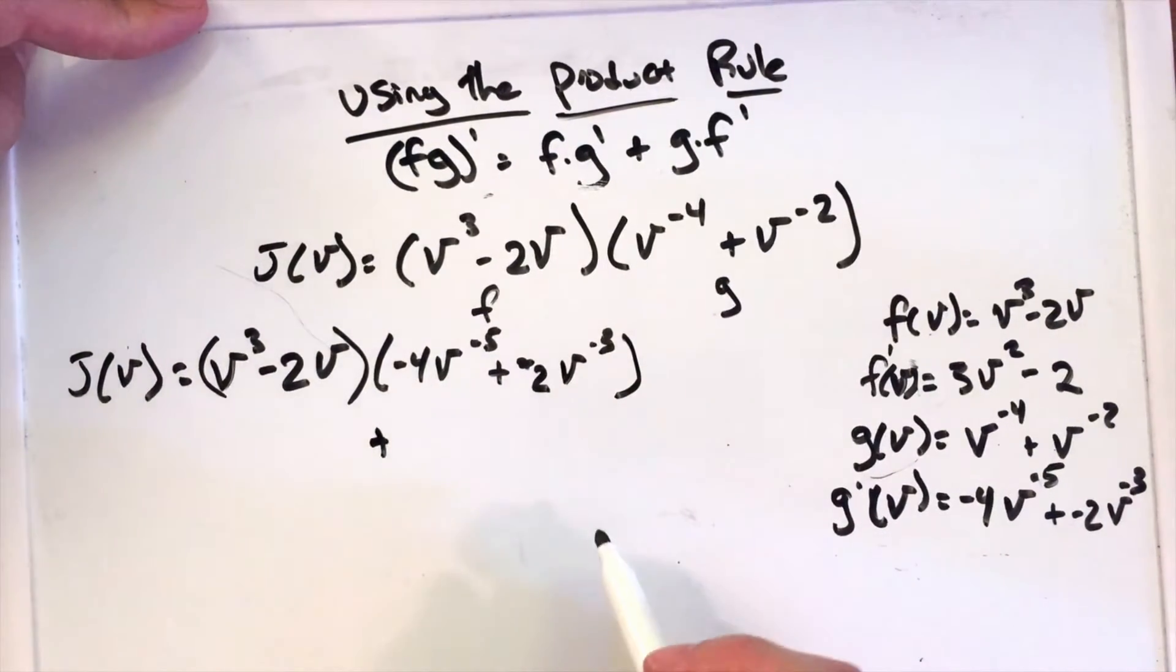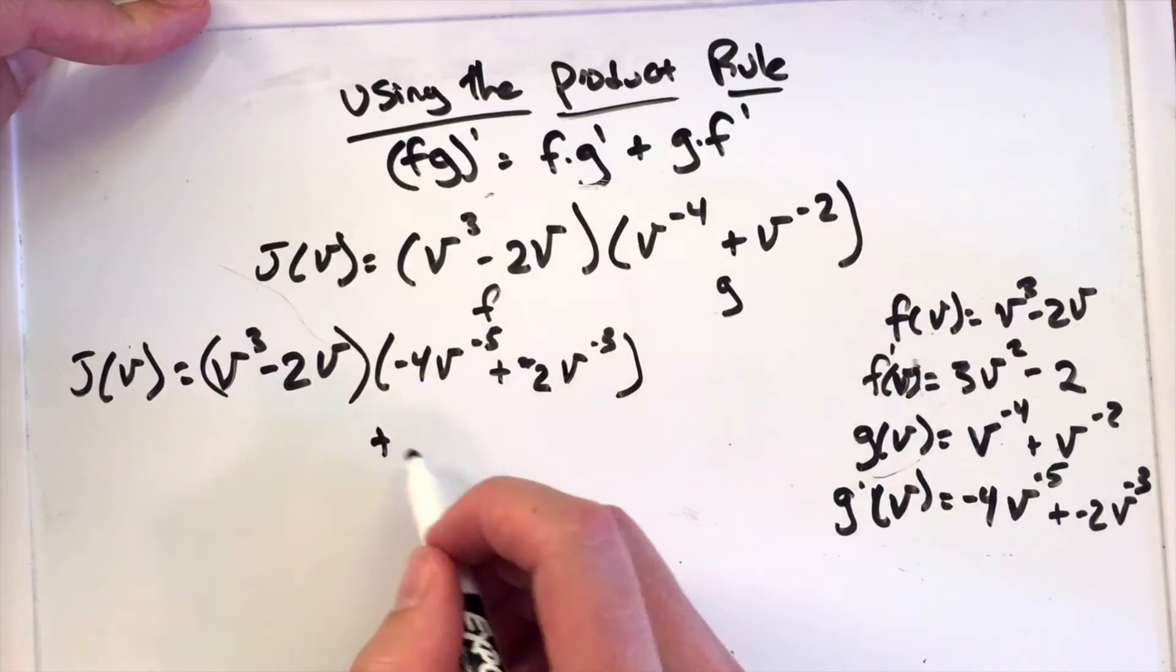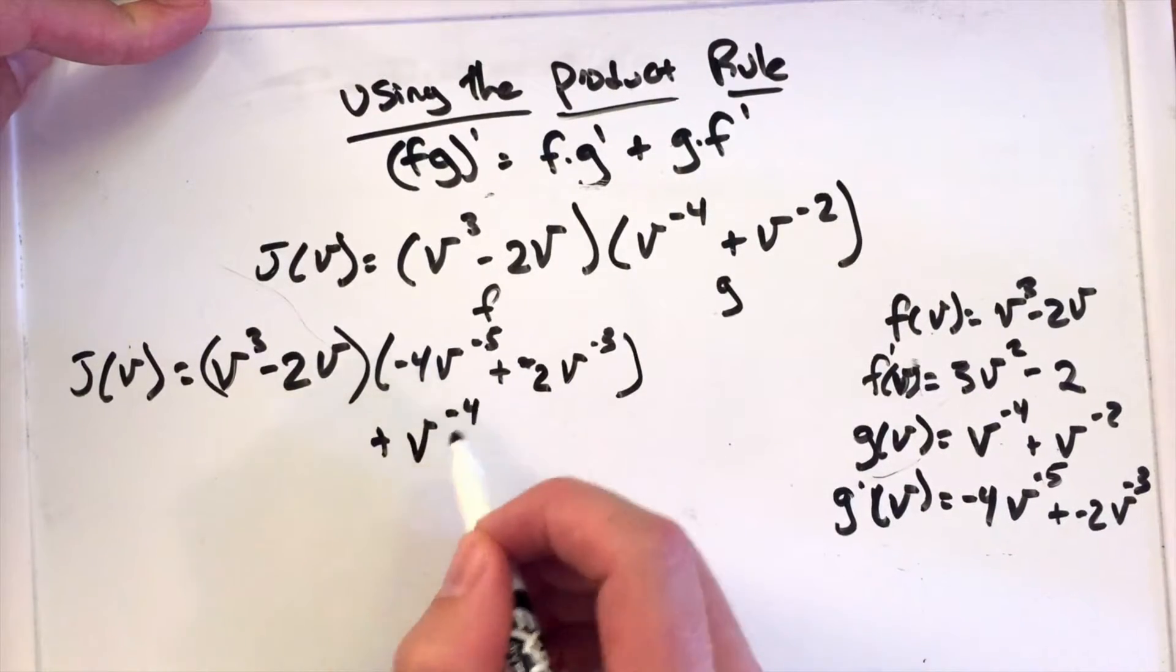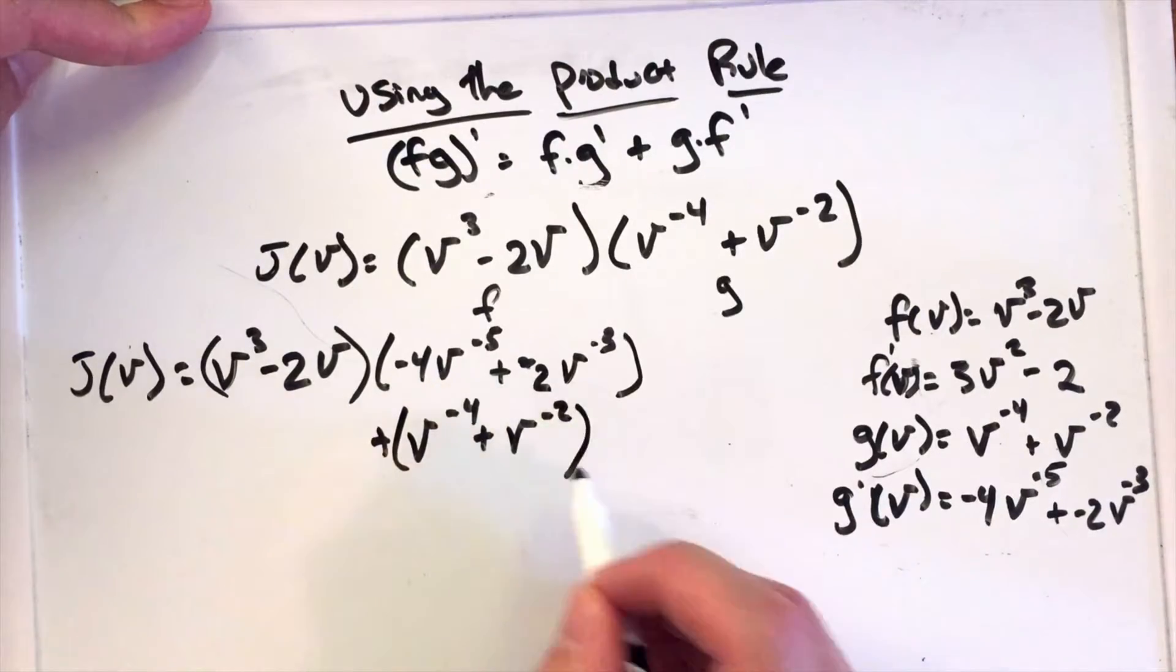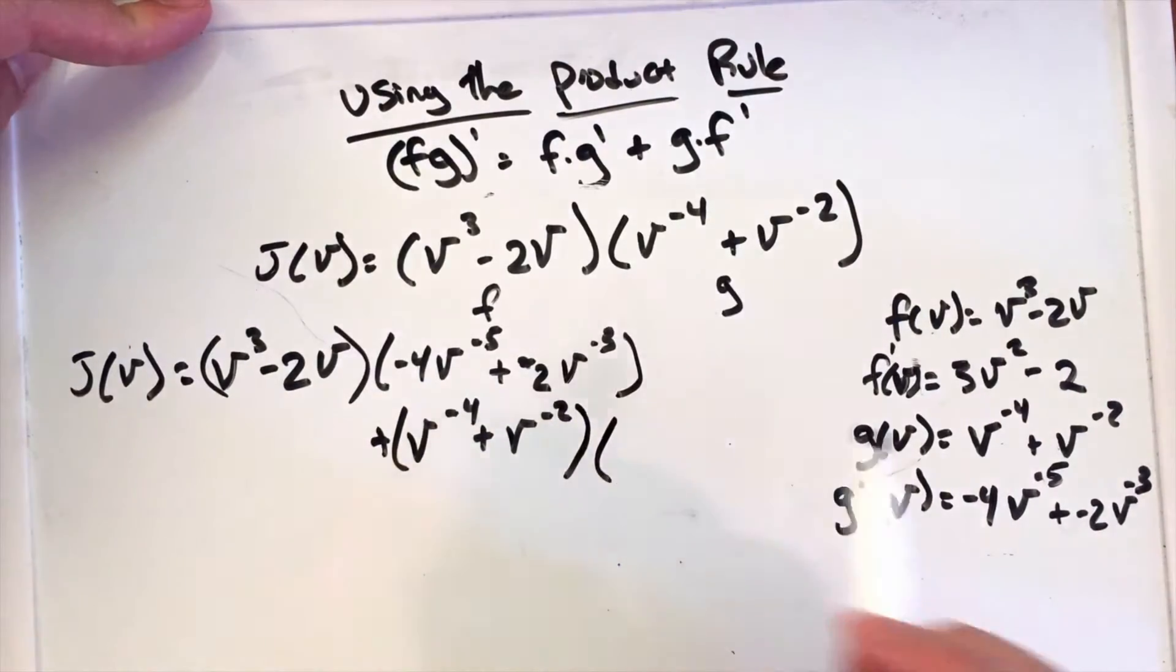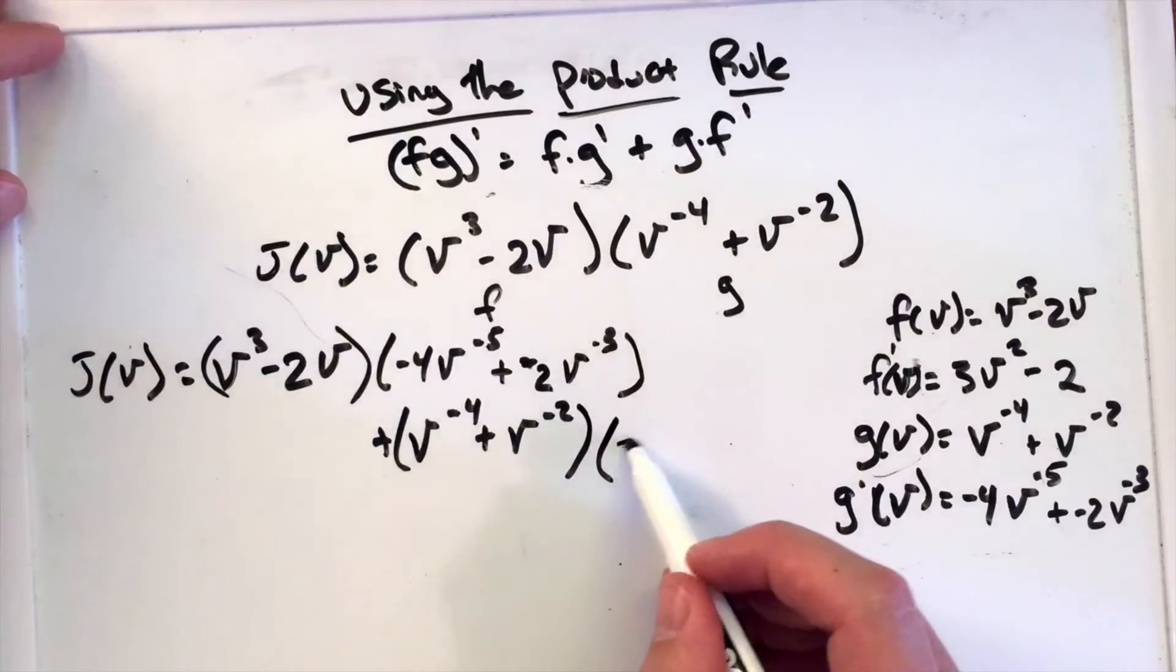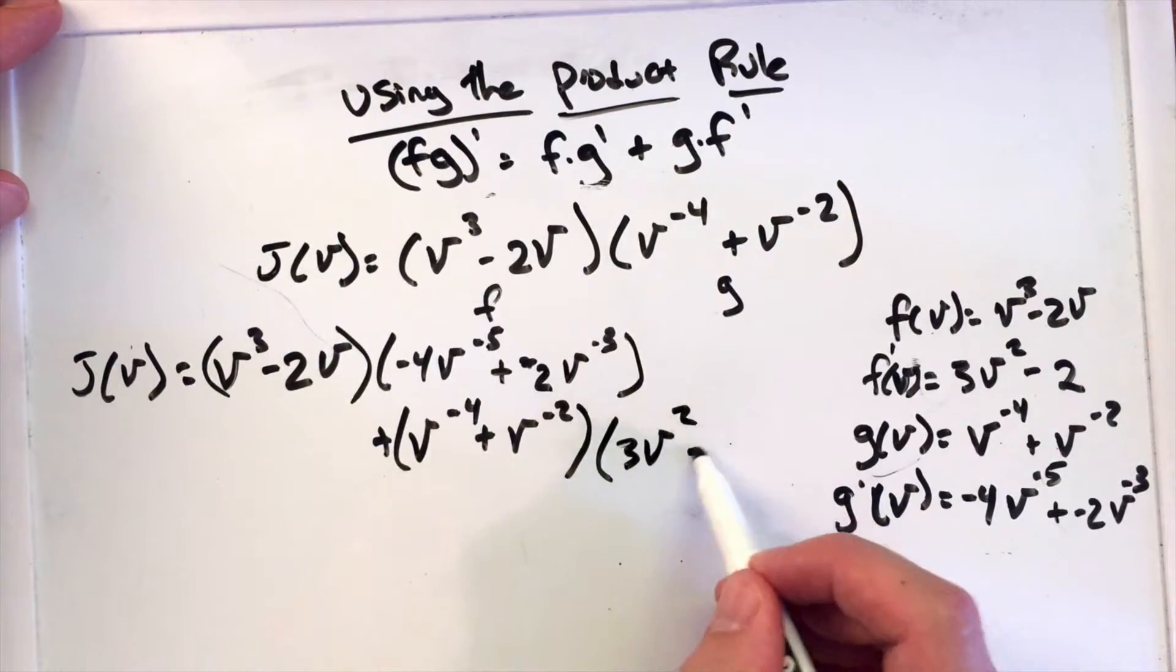Plus the second half, plus g, (v^-4 + v^-2), times f', which is (3v² - 2), and there you go.